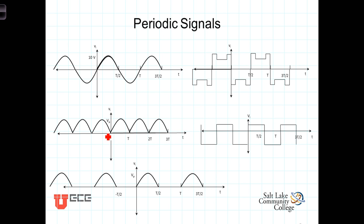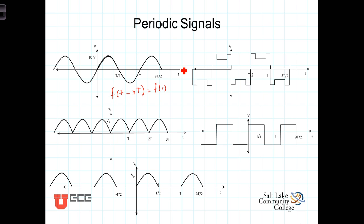We have here a number of different periodic waveforms. By periodic, we mean the waveform repeats itself every T seconds. Here's just a simple sinusoid — it's periodic, repeating itself every T seconds. Mathematically, we can say that f(t - nT) is equal to f(t), where n is an integer multiple. So f(t) consists of repeating periods: f(t) equals f(t - T), equals f(t - 2T), and so on.